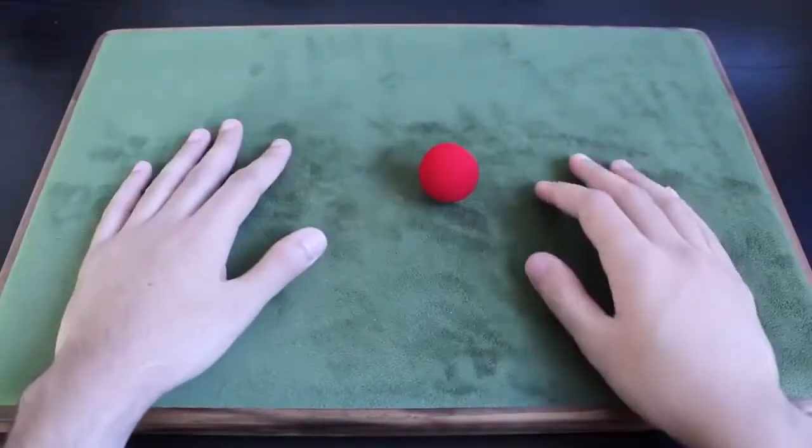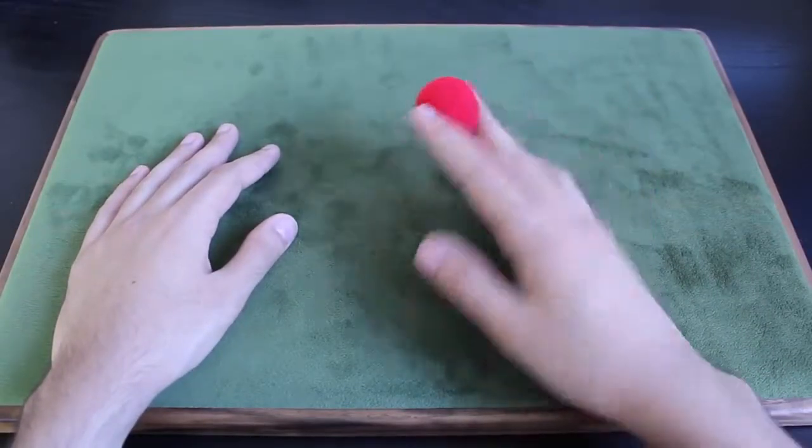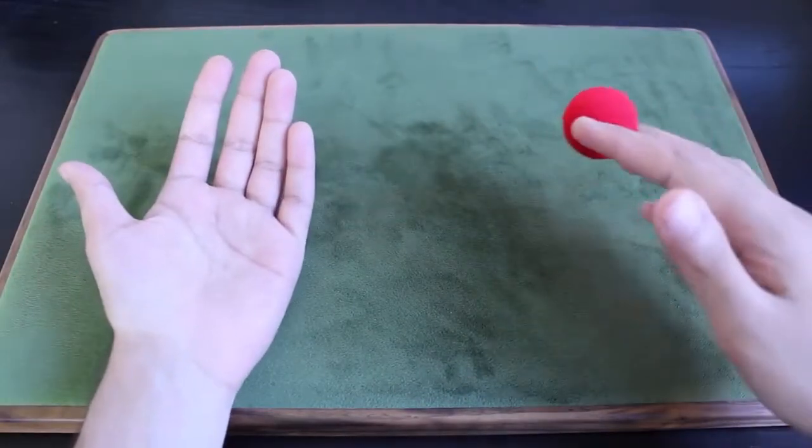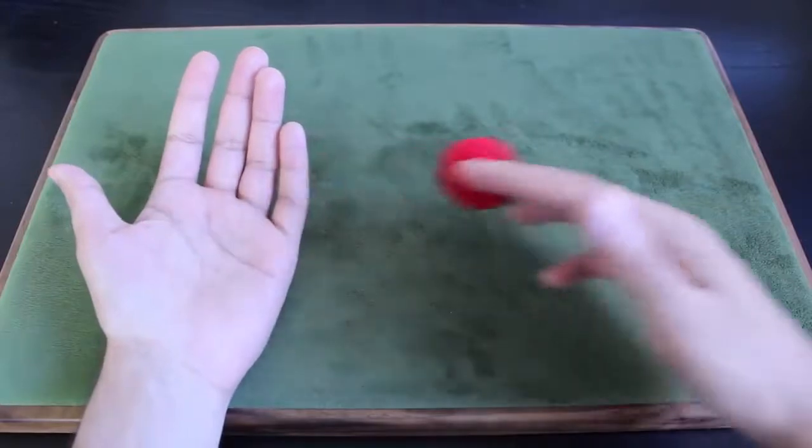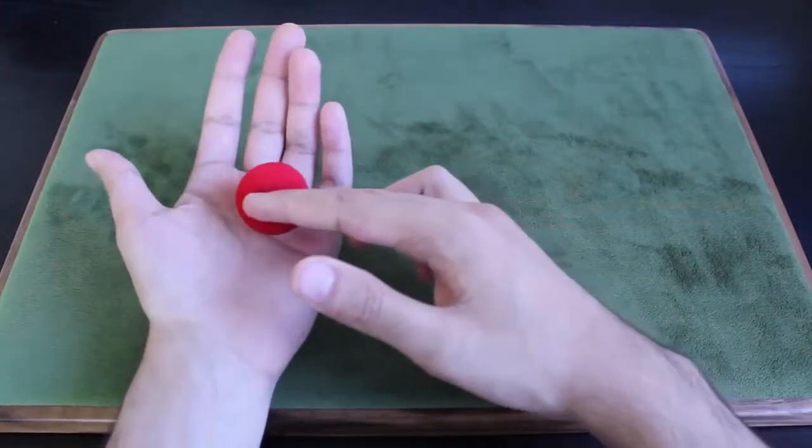Let me give you a behind the scenes view of what's happening in this false transfer. You pinch the ball between your first and ring finger of your right hand, just like that. You have your left hand palm up, and as you approach your left hand, you're going to start to curl your fingers around the ball. And then in that moment,